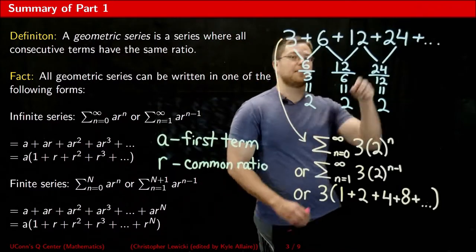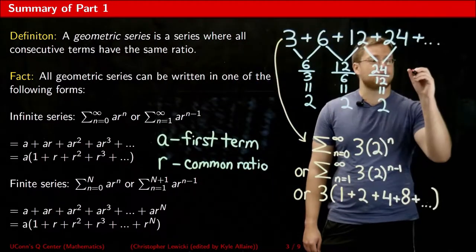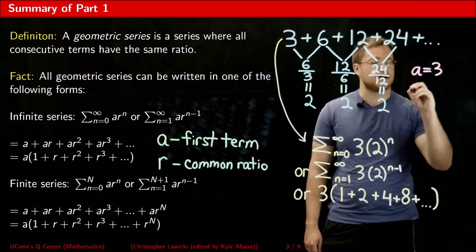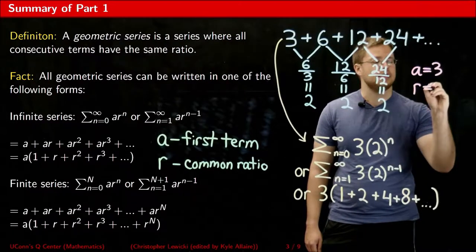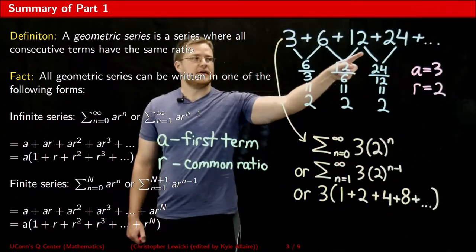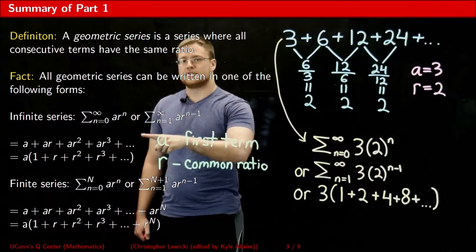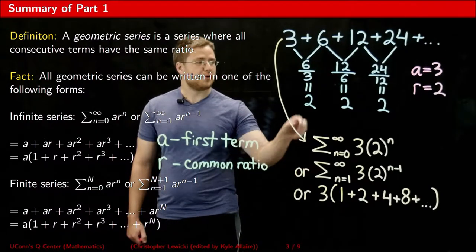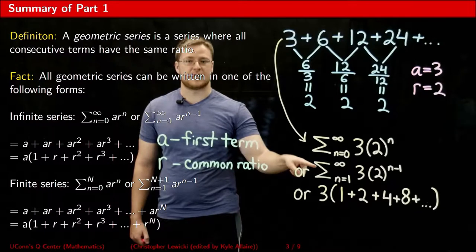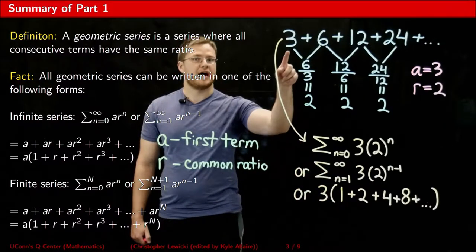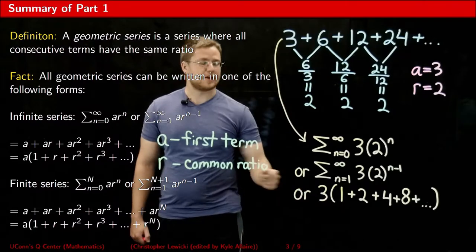So in this example here, because three is my first term, what I would say is a is equal to three. And because two is my common ratio, I would say that r is equal to two. The way that it's written out here looks just like how it's written here. This is how I would represent this same series using sigma notation. I could also write it this way where the common three factor is factored out.